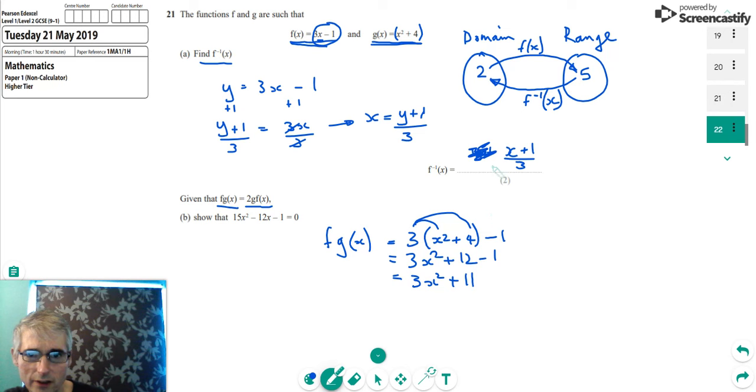Okay, and if we also find g of f of x, doing that in the same way, g of f of x means starting with the g function there. But wherever we see x, so here we can see the x squared, wherever we see x,